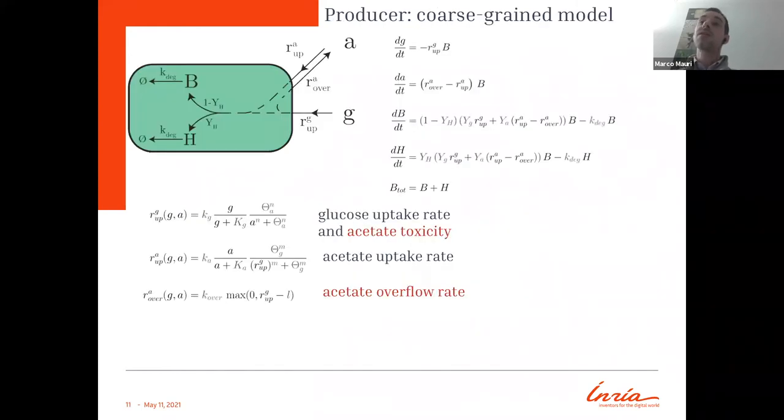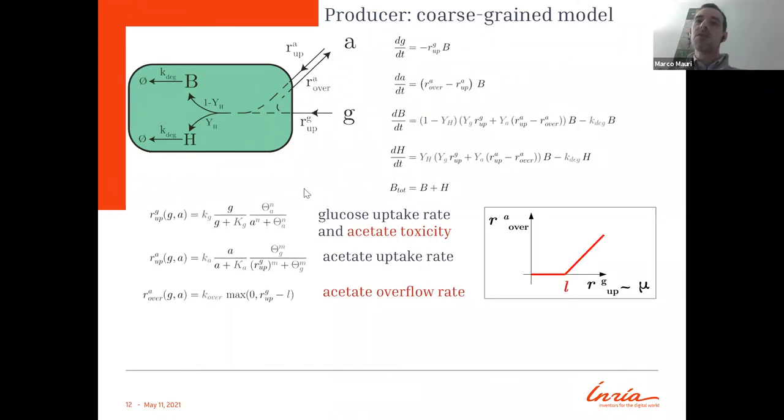Here we just give you a glimpse of the mathematical model behind it. So we have here the producer, where we have the glucose that can be uptaken with a certain rate, and also secretes acetate at a certain point. Acetate can be reused as a secondary carbon source. This is described by a system of differential equations where we specify the rates given by some phenomenological functions.